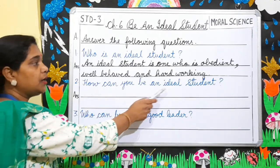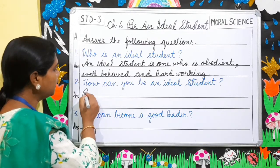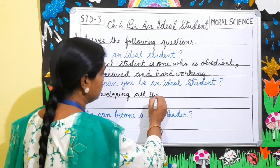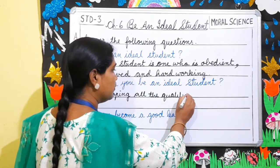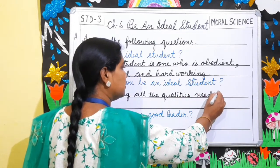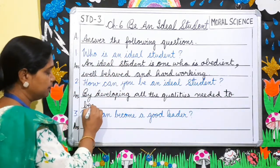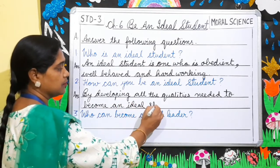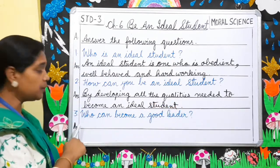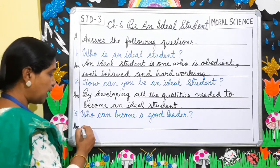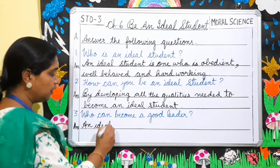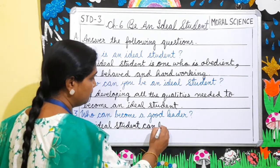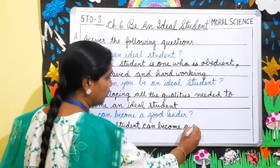Question 2: How can you be an ideal student? By developing all the qualities needed to become an ideal student. Question 3: Who can become a good leader? An ideal student can become a good leader.